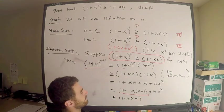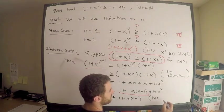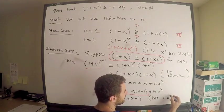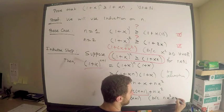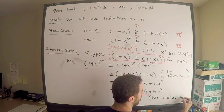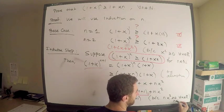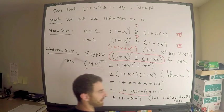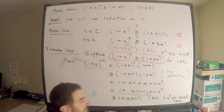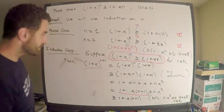That this is greater than or equal to 1 plus x times n plus 1. Justification is because nx squared is greater than or equal to 0 for all x in R, all real numbers x, and n in N. Clearly, right?